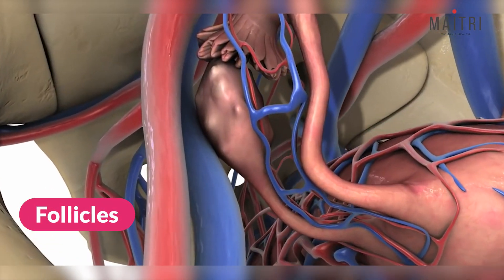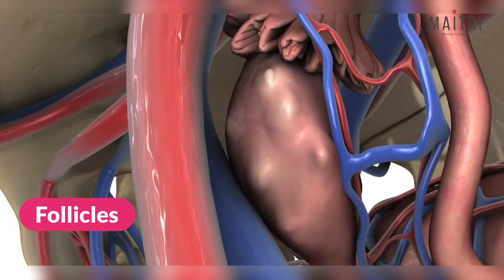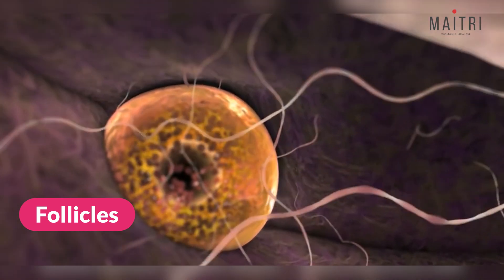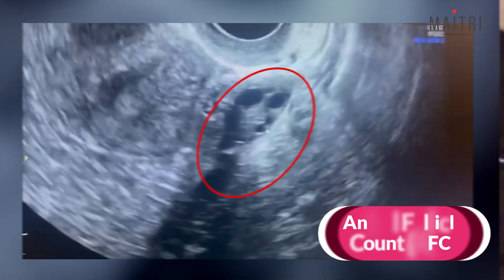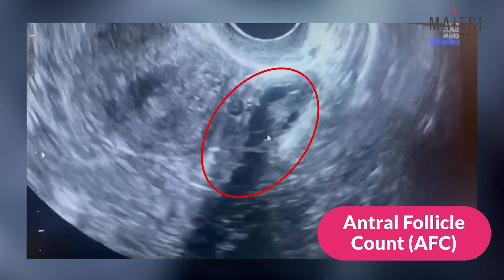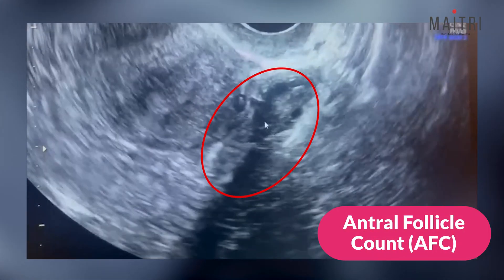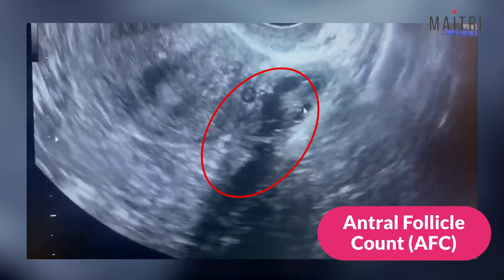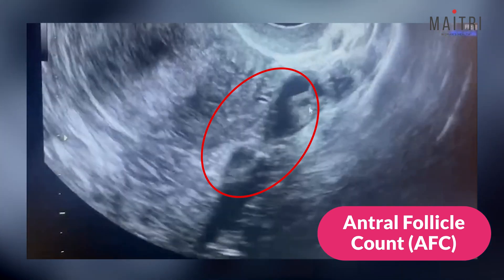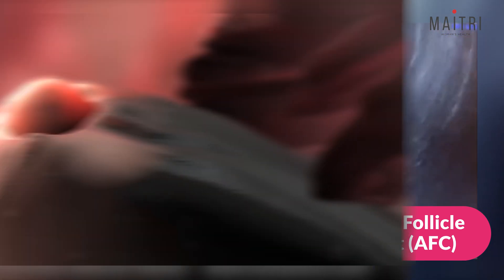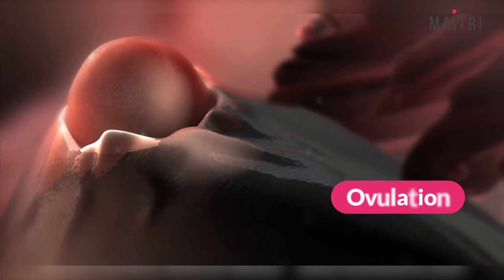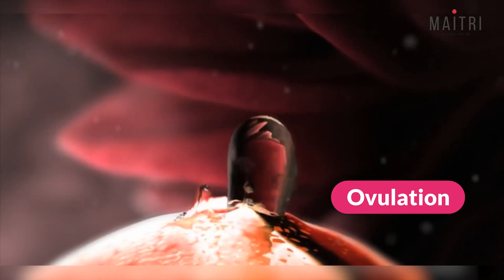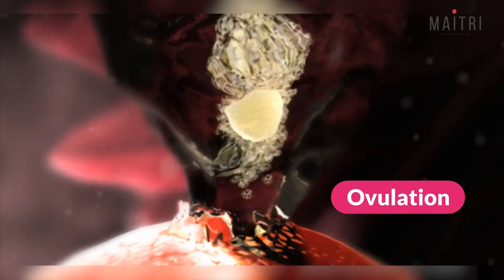Follicles: small sacs in your ovaries that hold immature or budding eggs. Antral follicle count: an ultrasound scan to count the number of follicles visible in your ovaries, helping us assess your fertility potential. Ovulation: when an egg is released from the ovary — it's the prime time for conception.